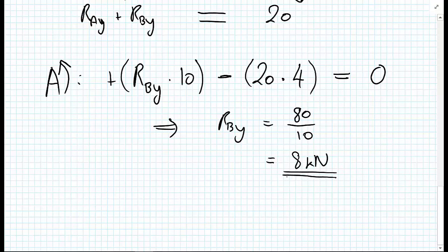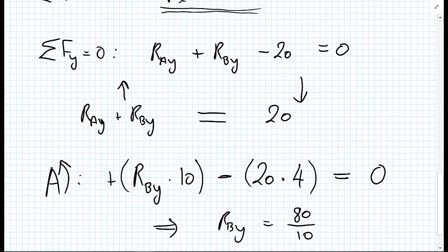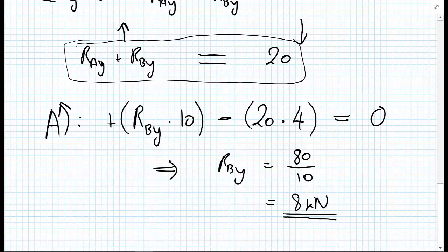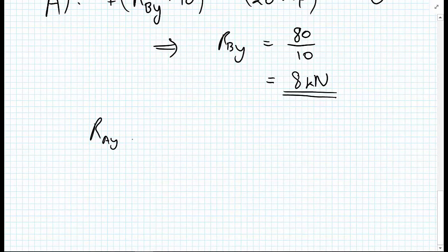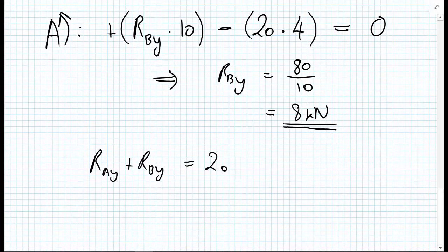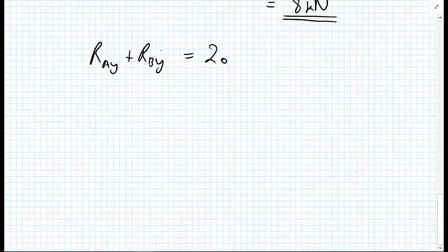Okay. At this point, I'm going to write this moment equation in an alternative way. Or I'll come back in a minute to how I'd write this in an alternative way. What I'm now going to do is take this 8 kilonewtons back into my equation for vertical equilibrium. So this was this equation here. So R A Y plus R B Y equals 20. And we can take this R B Y, which I now know is 8, take that onto the right-hand side. So R A Y equals 20 minus 8, which equals 12 kilonewtons.